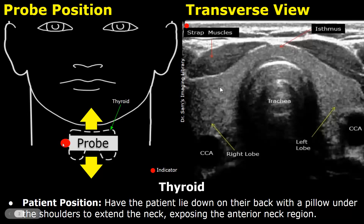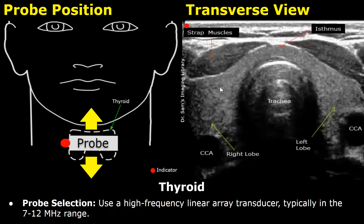Have the patient lie down on their back with a pillow under the shoulders to extend the neck, exposing the anterior neck region. Use a high frequency linear array transducer, typically in the 7 to 12 megahertz range.